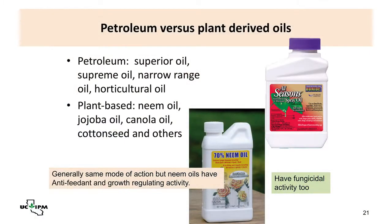Regarding petroleum versus plant-based oils: petroleum-based insecticidal oils are very highly refined — similar to baby oil — and are used at about 1–2% in water. They are very benign in the environment at those concentrations. Plant-based oils like neem work similarly by smothering insects and disrupting respiration. Neem oil may also contain a small insect growth regulator component, adding another mode of action. Both petroleum and neem oils have fungicidal activity.